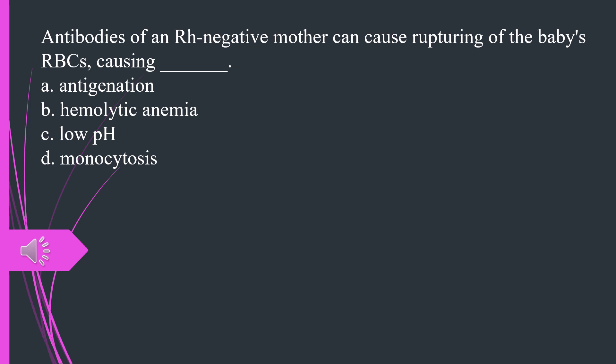Antibodies of an Rh-negative mother can cause rupturing of the baby's RBCs, causing A. Antigenation B. Hemolytic anemia C. Low pH D. Monocytosis. The answer is B, hemolytic anemia.